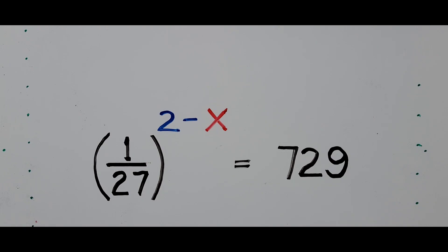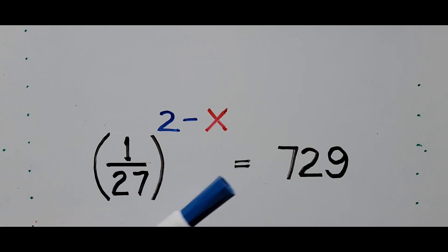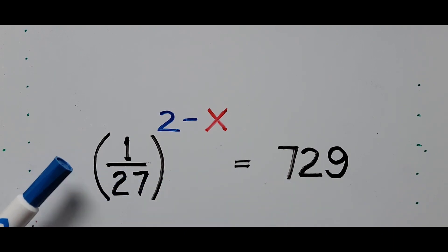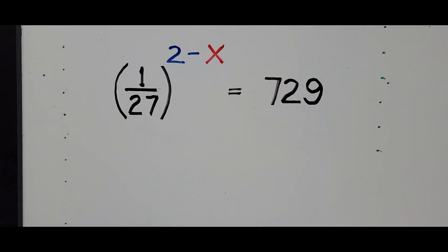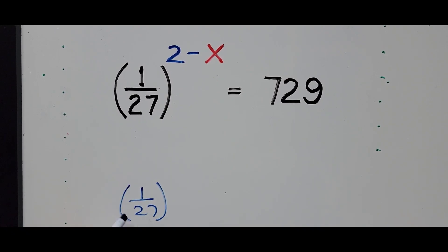On a different approach, like using logarithms, we can directly solve the problem by equating both sides with the common logarithm or the natural logarithm. But let's start with the laws of exponents. Write the equation again: 1 over 27 raised to the exponent 2 minus x equals 729.